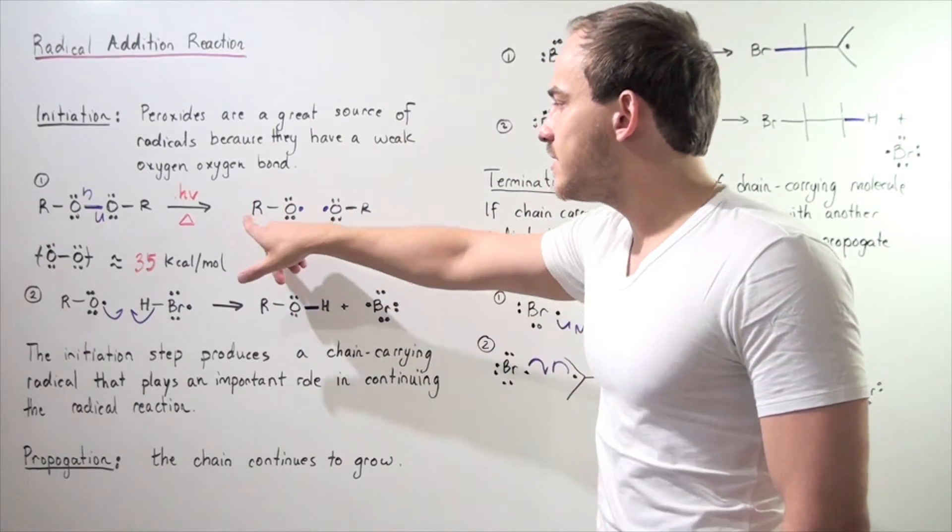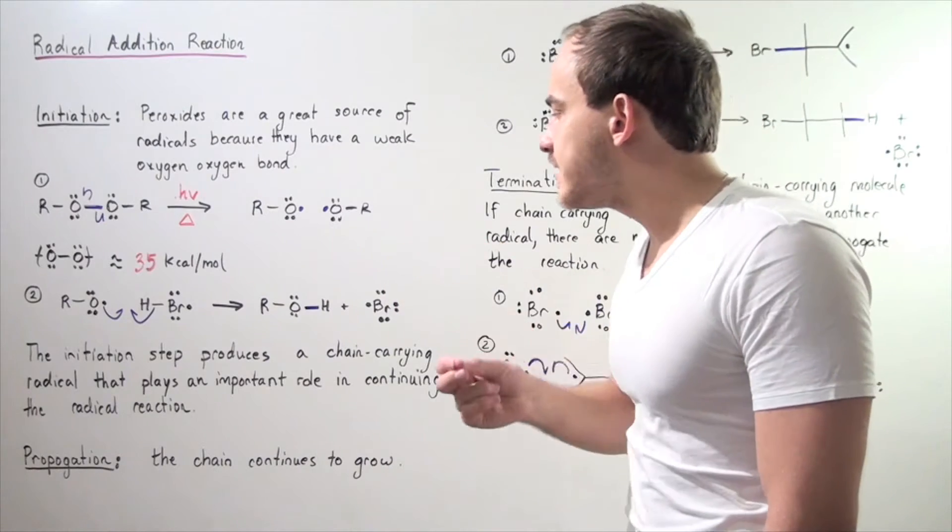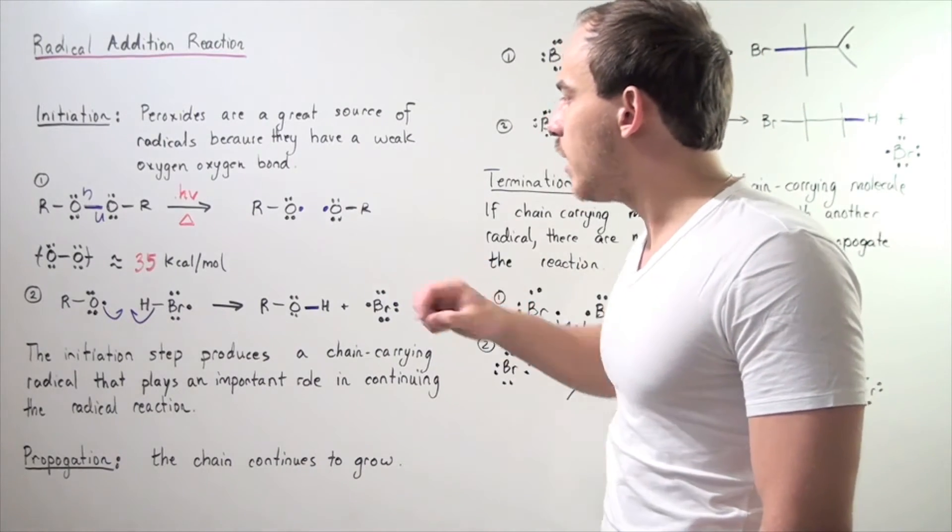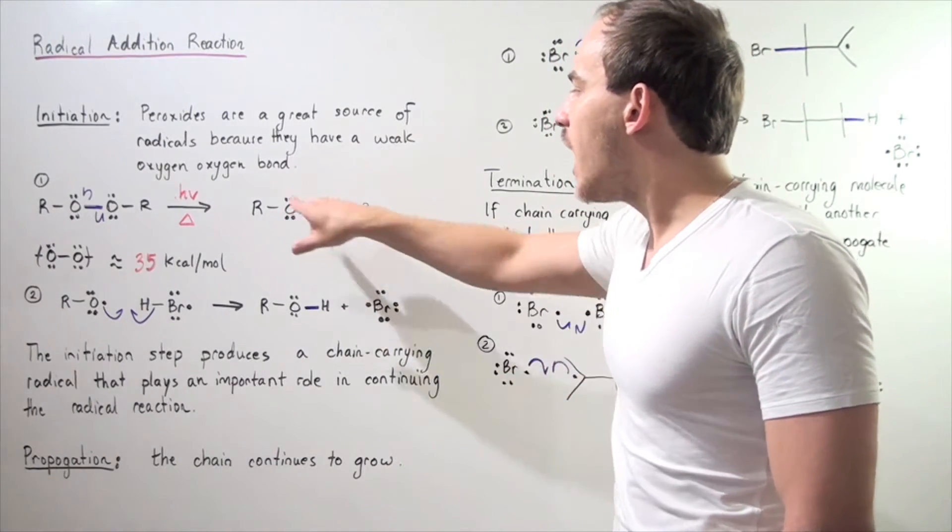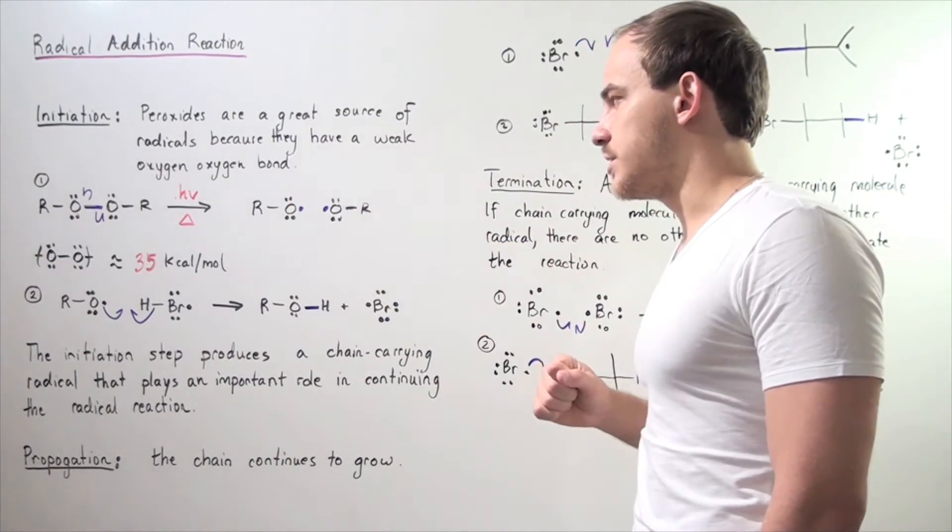Notice we have a single electron in the non-bonding orbital of the oxygen on each of these oxygens.